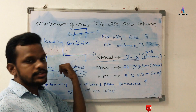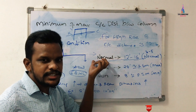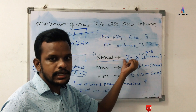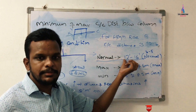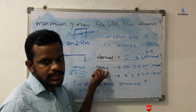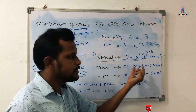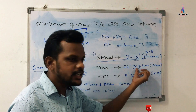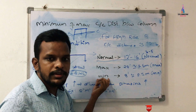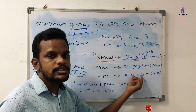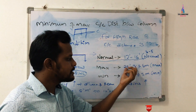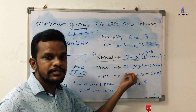In general, for constructing any building we take 12 feet to 16 feet center-to-center distance between columns. For maximum center-to-center distance we consider 24 feet, approximately equal to 7.5 meters. For minimum center-to-center distance we take 8 feet, approximately equal to 2.5 meters. These factors are important when considering any kind of building design.